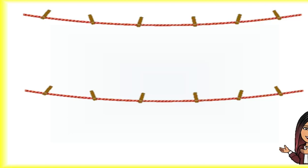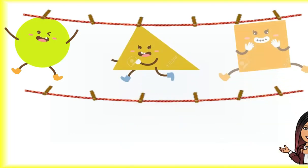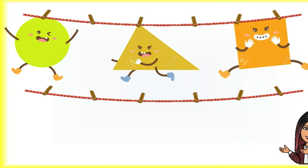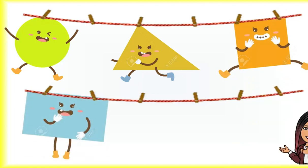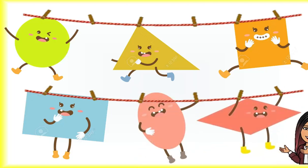Let's remember the shapes first. Circle, triangle, square, rectangle, oval, rhombus. It's your turn now. Can you repeat the names? Ready? Go!